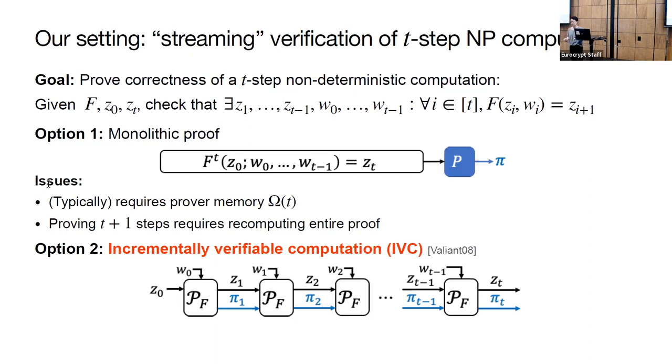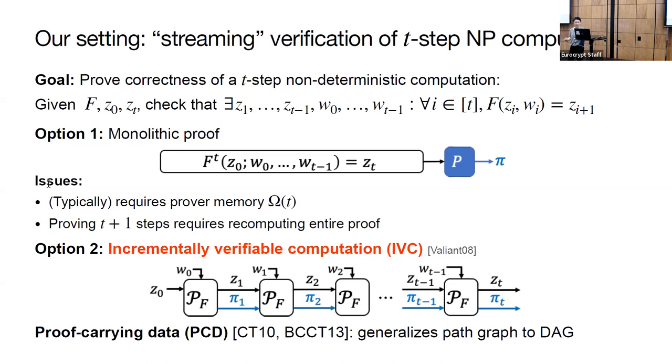A better method is to verify the computation incrementally, or in a streaming fashion. Now we run a prover to prove the computation at every time step. Also, the prover checks that the proof produced in the previous step is valid. This approach is called incrementally verifiable computation, or IVC, and it was invented by Valiant in 2008. Further, a generalization of IVC is a primitive called proof carrying data, or PCD. For this, we generalize a path graph computation into a directed acyclic graph computation. For this talk, we'll focus on the IVC setting, but everything generalizes to PCD.